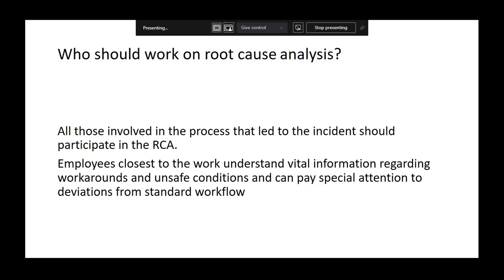Who is responsible for authorizing resumption of work after correction — all these things must be defined in the SOP itself. In the RCA process, we must define who should be involved. For example, if it is an accession error, the accession team members must be involved, because they are the ground-level workers who know the actual process. All people involved in the process should be given the opportunity to participate and suggest possible causes.